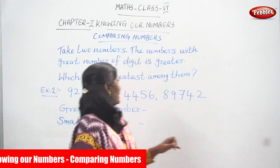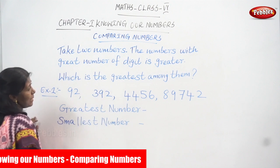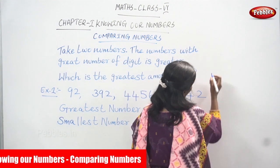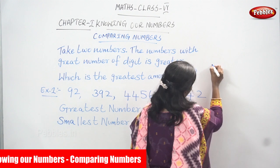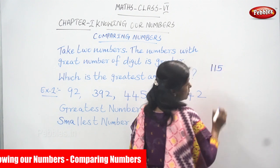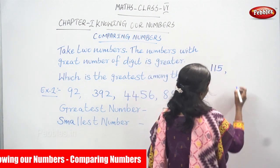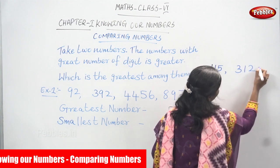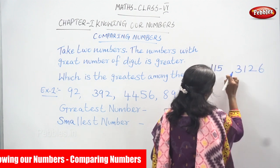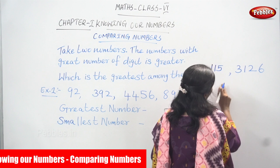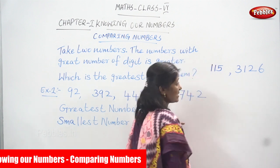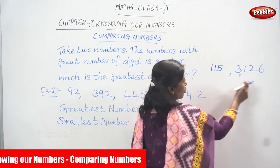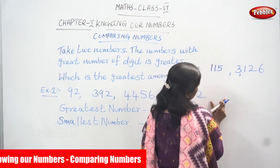Now, see which is the greatest among them. Before that, let me give a small example. Take two numbers. One is 115, and the other number is 3126. These are the two numbers. First number is 115, second number is 3126. I am going to compare these two numbers.